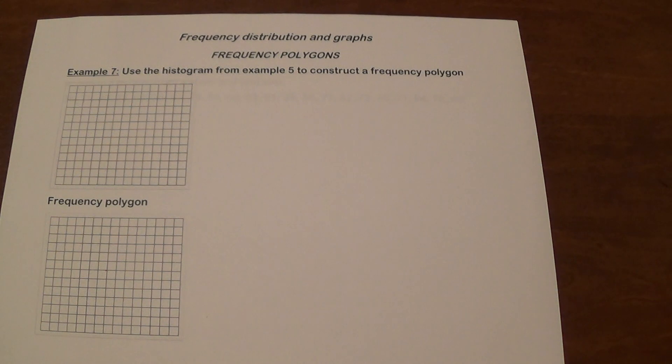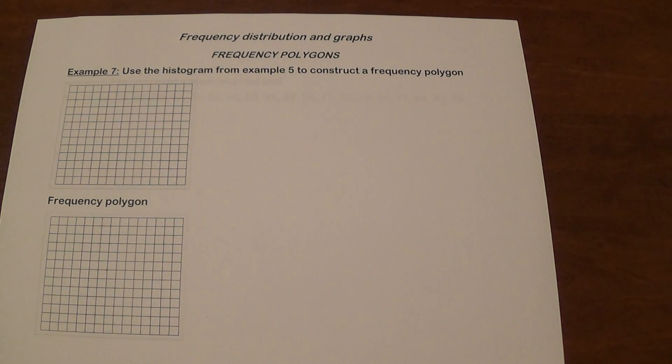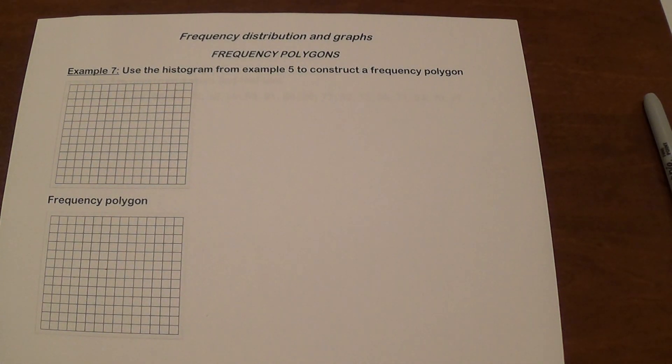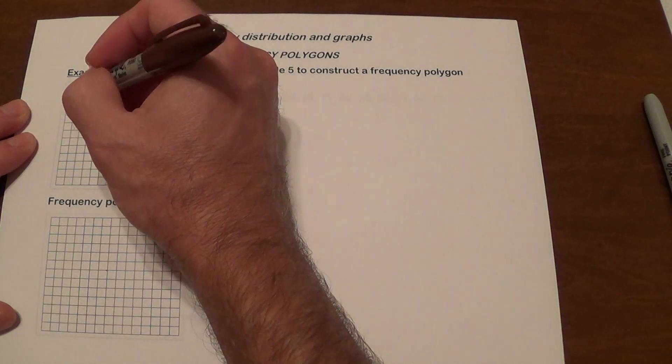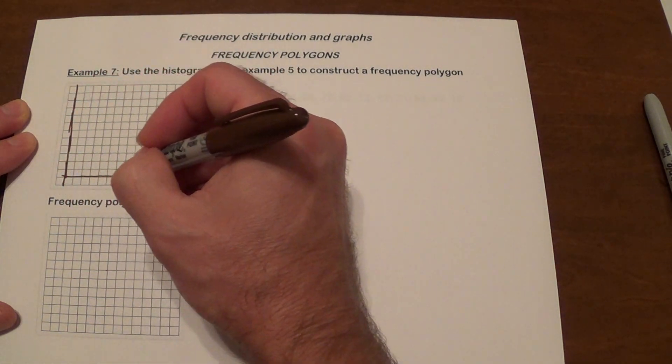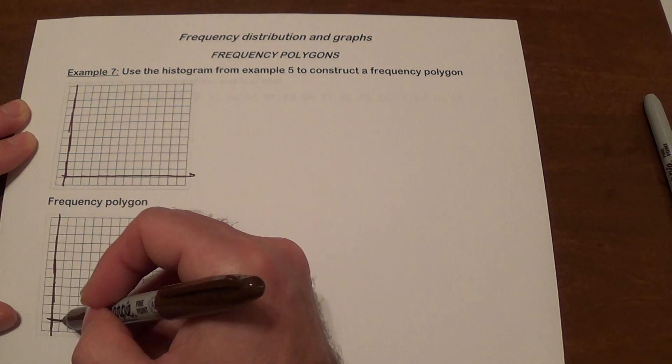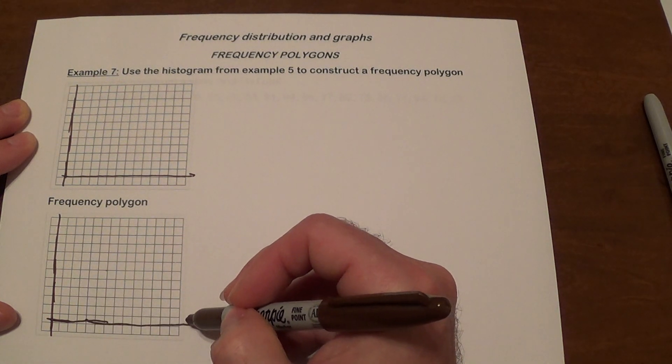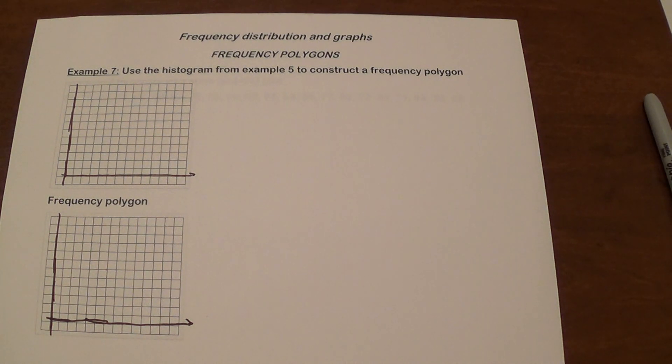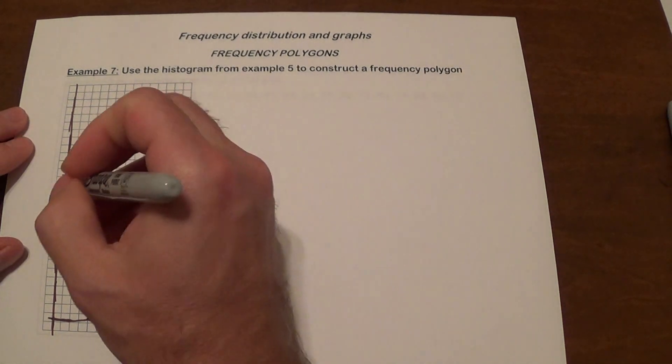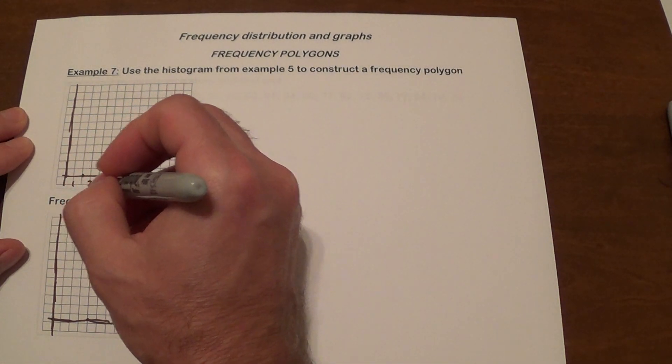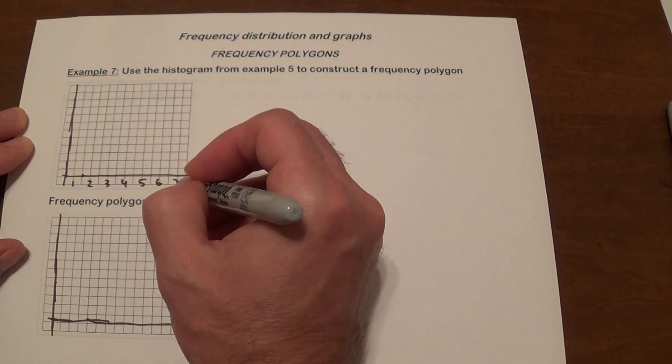Now we're going to use a histogram from example 5 to construct what's called a frequency polygon. So I'll copy that histogram first. And then I'm going to show you how we create a frequency polygon. I'm going to do the same thing here. It's actually a very easy thing to do. But you do need to have a histogram to be able to create a frequency polygon. All right. So what we had here was, let me prepare this first. So this was 1, this was 2, 3, 4, 5, 6, 7, and 8.